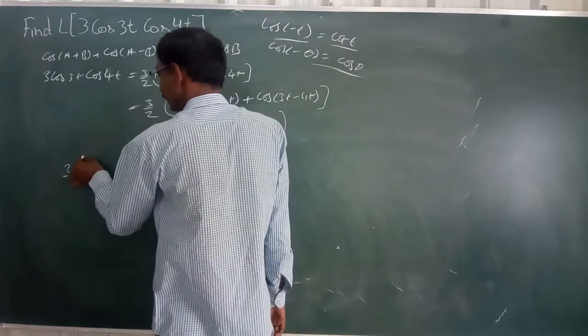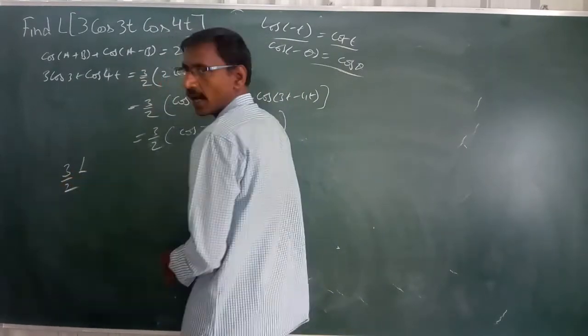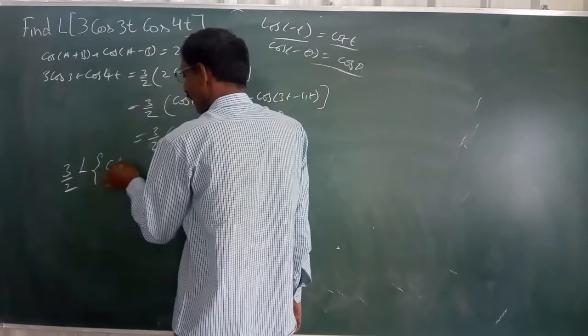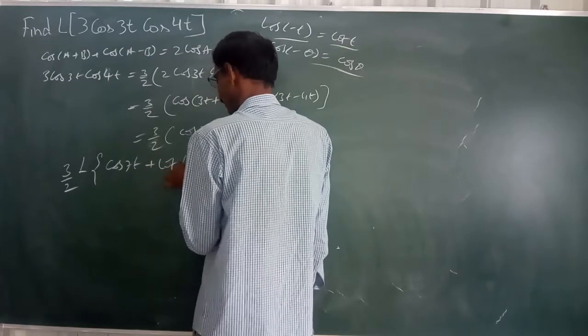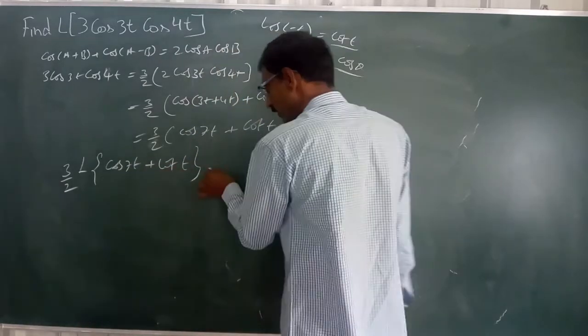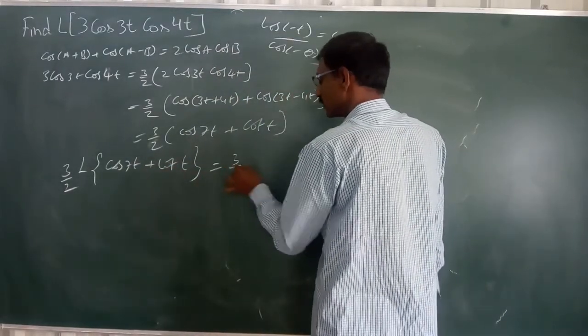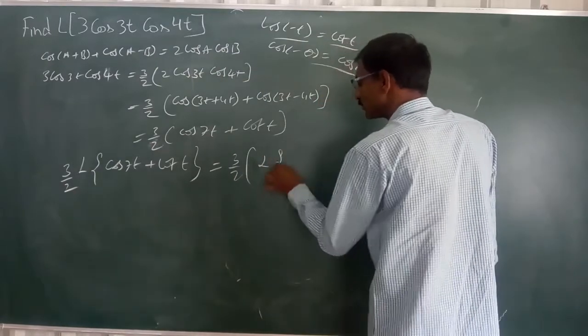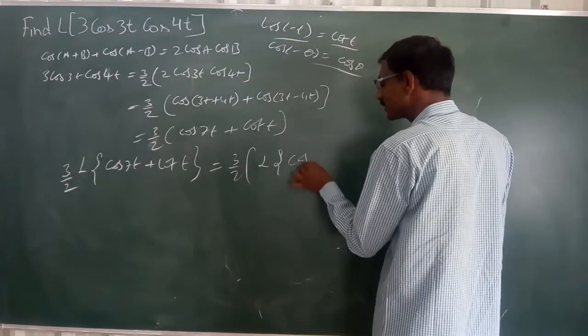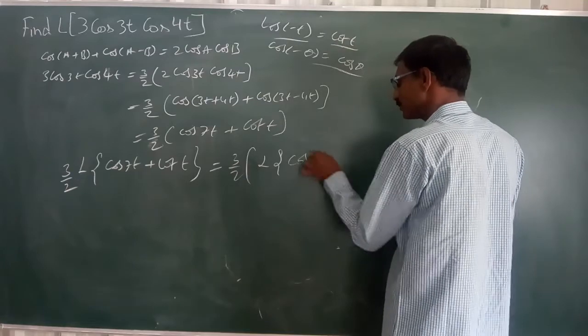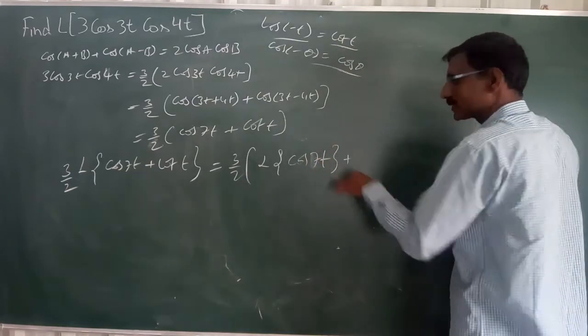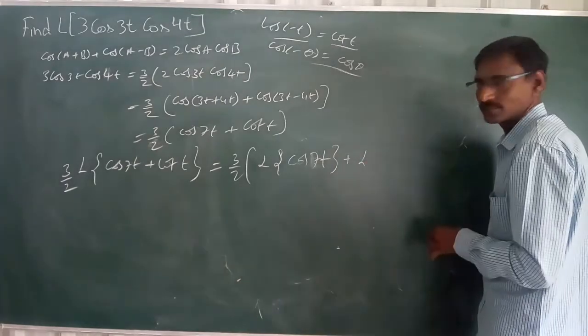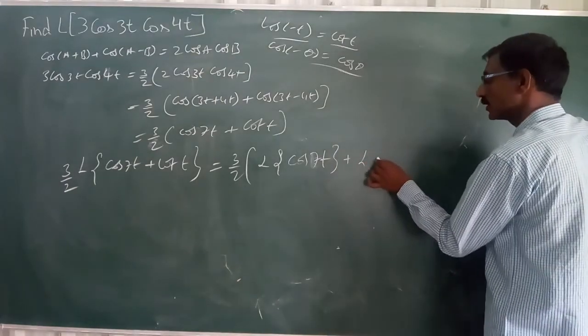So, 3 into 3 by 2 for L'Hopital's rule. Cos 7 theta plus cos theta plus cos theta.